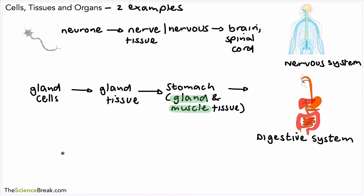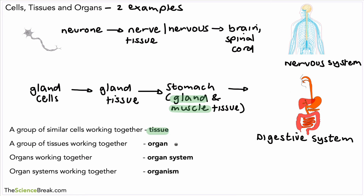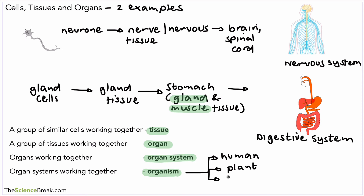Here's a summary: a group of cells working together makes tissue; a group of tissues working together to perform a particular job makes an organ; organs working together to do a particular job form the organ system; and when organ systems work together we refer to that as the organism — meaning living things. Examples include humans, plants of all sorts, elephants, and daisies — all types of organisms made of cells, tissues, organs, and organ systems. That's a summary of cells, tissues and organs for Key Stage 3 biology.